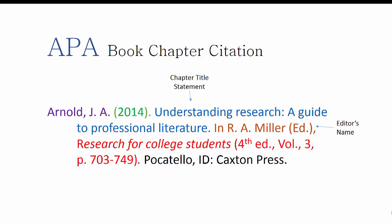Specific information about the work, such as the edition and the particular chapter or section used, follows — with the volume number and the page span all in parentheses. If this is the first edition and the whole book was used as a source, no specific title or location information is needed. The city and state of the publisher is next, with a colon and then the publisher name.